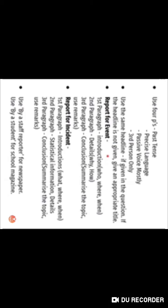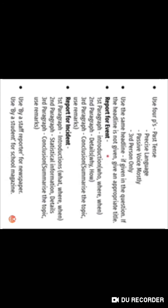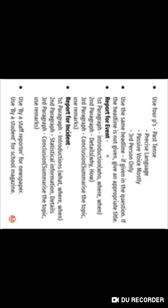For an event report, you have to make three paragraphs. After each paragraph, leave one line, then write the next paragraph. You have to write 100 to 150 words for your report. In the first paragraph, which is the introduction, you have to describe what the event is about, why it was held, where it took place, and what the motive of it is. All this should be clear in the introduction.